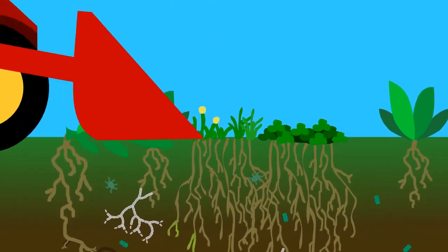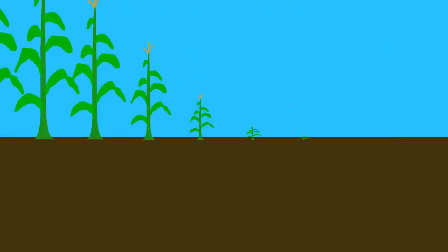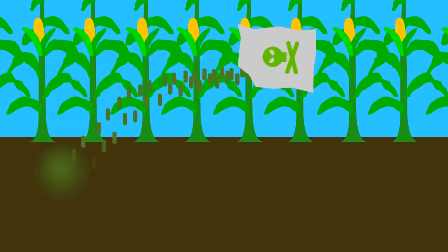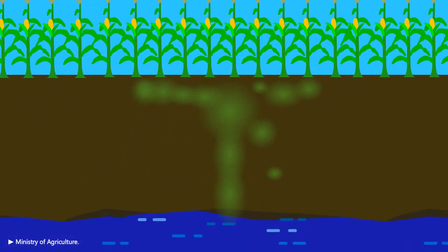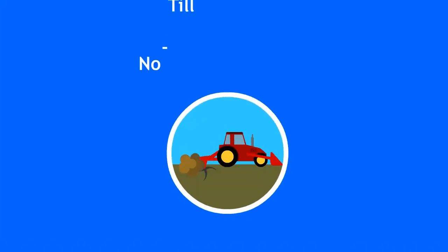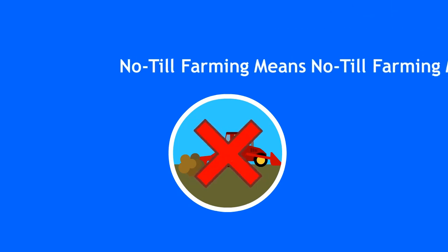Once soil is turned over by a machine, most of these organisms are killed, so the crops must rely on chemical fertilizer, which ends up leaching into the water. Central to no-till farming is to not do that.